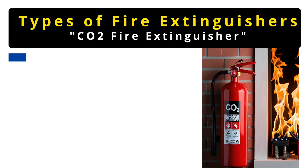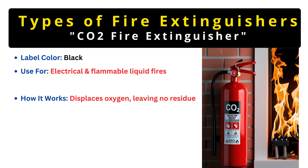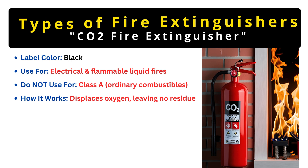Now let's talk about CO2 extinguishers — the ones with the black label. These are a favorite for offices and labs because they are perfect for electrical fires. Unlike water or foam, CO2 doesn't conduct electricity, making it safe for things like computers, wiring, or machinery. It works by displacing oxygen, effectively suffocating the fire. Another big plus: it leaves no residue, so there's no messy cleanup. The downside is it's not great for ordinary fires like wood or paper, because while it removes oxygen, it doesn't cool the material enough, meaning the fire could reignite once the CO2 dissipates.